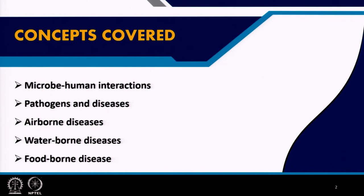We will start with the first part: microbe-human interaction — what is the nature of the interaction between microorganisms and human beings and diseases. This is an extremely short review of pathogens and diseases, so we will go through it very quickly; at this point there is no need for us to become experts in this matter.